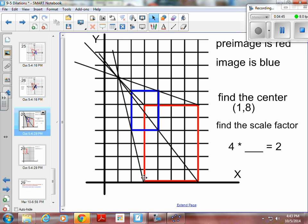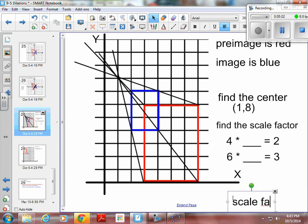Does that work on the other side? This is 1, 2, 3, 4, 5, 6. 6 times what equals? And then the same side on the blue is 1, 2, 3. Is 6 times 1 half going to give you 3? So yes, the scale factor equals 1 half.